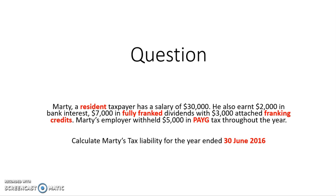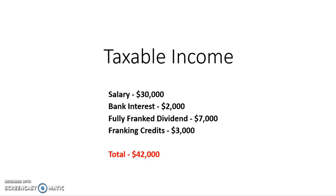The first step is to calculate our taxable income. Taxable income is assessable income minus deductions. We don't have any deductions in this question, but our assessable income is made up of the salary being $30,000, the bank interest being $2,000, the fully franked dividend which is $7,000, and also those franking credits which are $3,000. So it comes to $42,000. That is our taxable income — all those amounts are specified in the question.